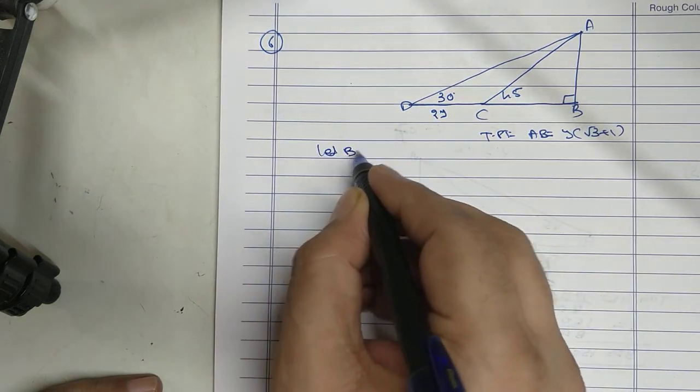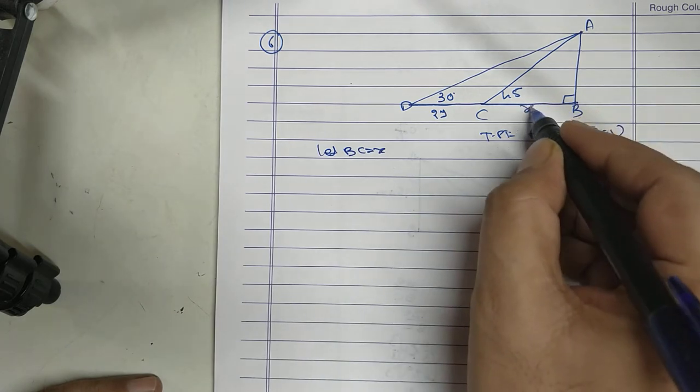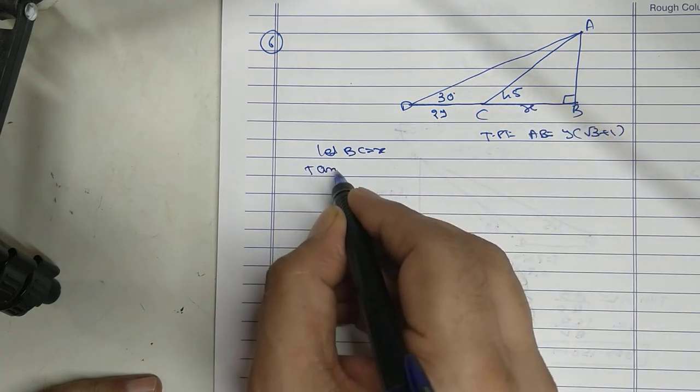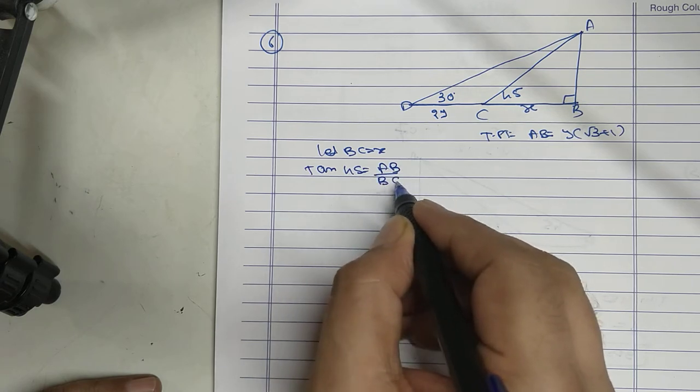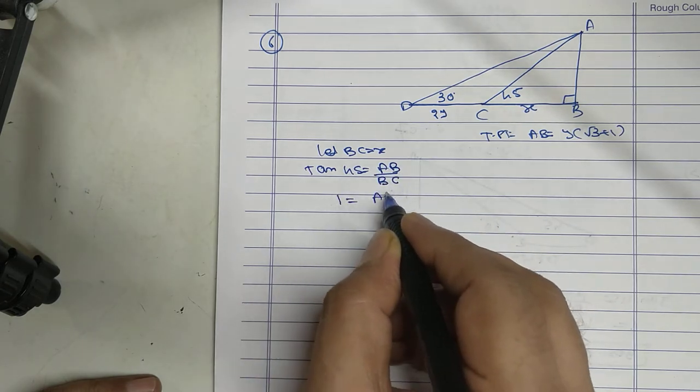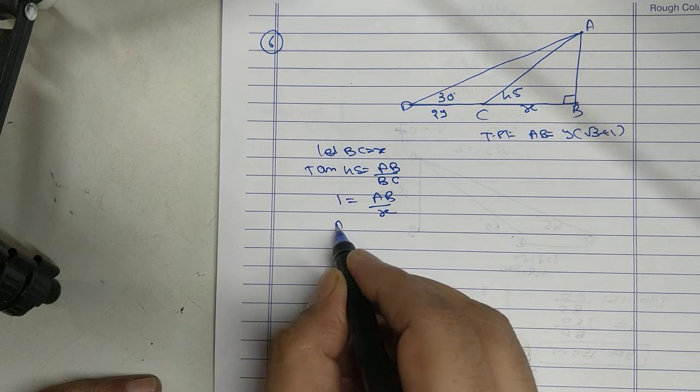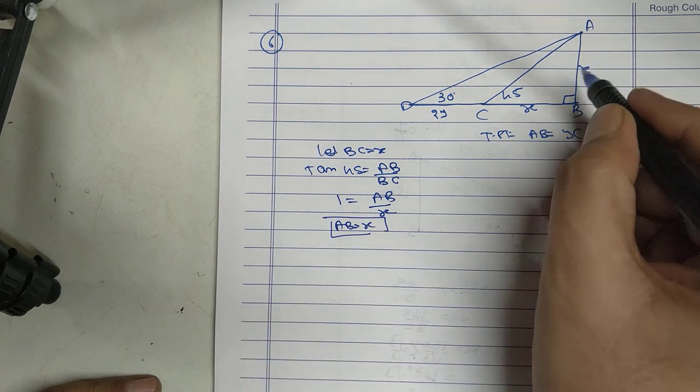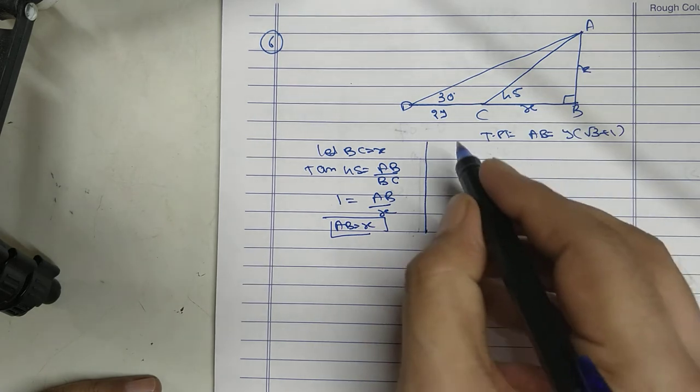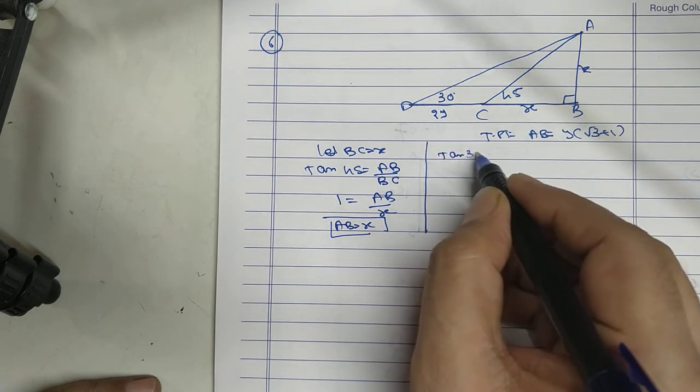Prove that AB equal to Y root 3 plus 1. Let BC equal to X. Tan 45, AB upon BC, AB upon X, AB equal to X. Now use Tan 30.